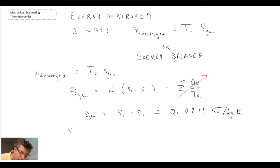Now for exergy destroyed, we take the entropy generated and multiply it by the surrounding temperature. Surrounding temperature was 25 degrees C, which is 298 Kelvin. And when we do that, we get exergy destroyed is equal to 6.29 kilojoules per kilogram.